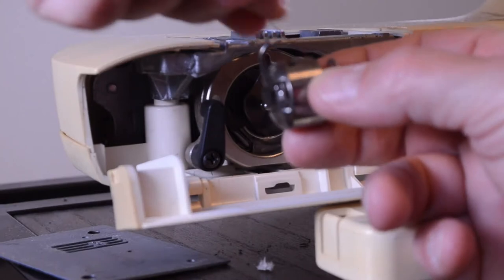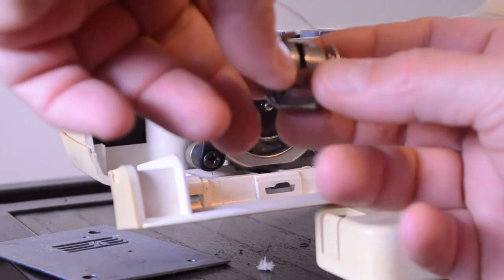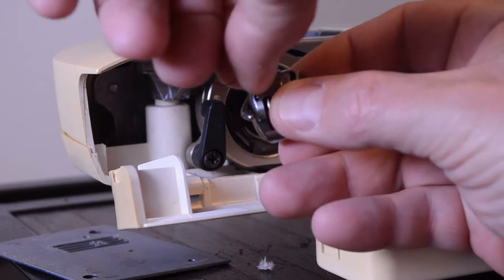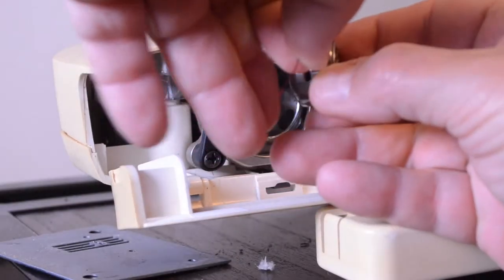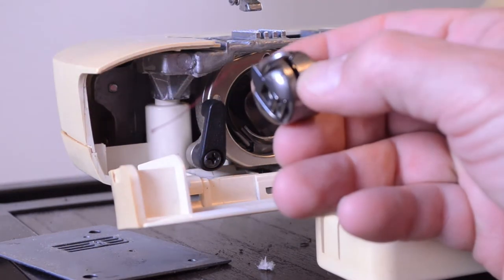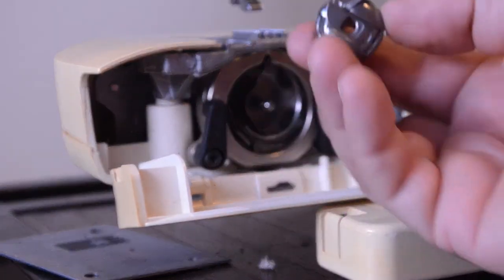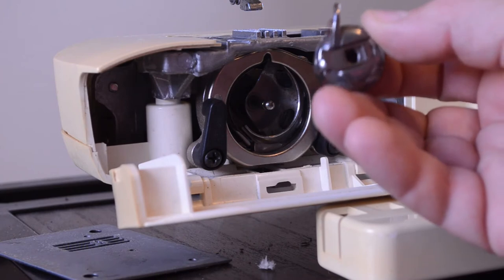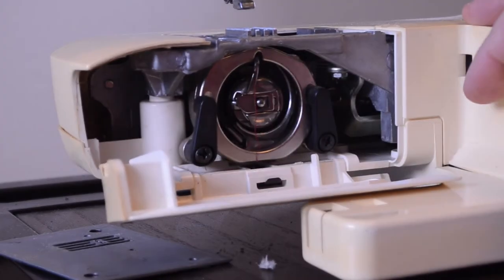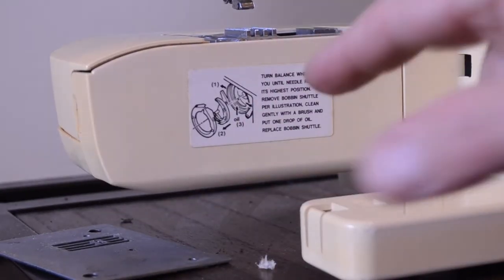For the bobbin, your thread's gonna be on top and it slides in here like this. The thread goes in this little notch down. Like so. That's it for your bobbin. And then this slides in just like this. Make sure your bobbin stays in there. And this slides in until it clicks. Boom. That's in. Close that. That's done.